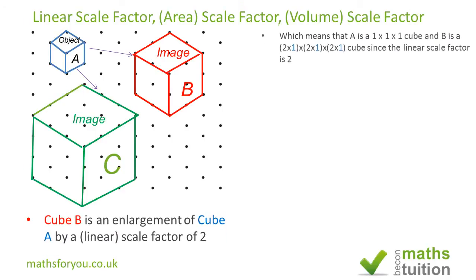Now to formalize all that, because that's been enlarged by a linear scale factor of 2, that dimension is 2 by 1, 2 times 1 by 2 times 1 by 2 times 1. That's what we call that because linear scale factor is 2. And similarly you can do the same thing for cube C.